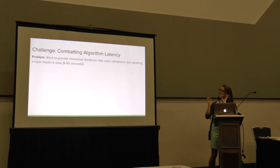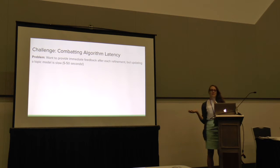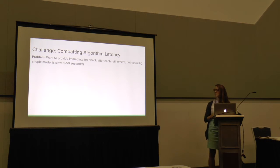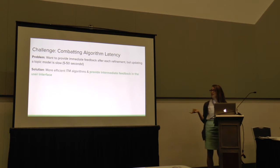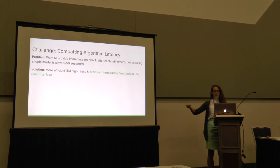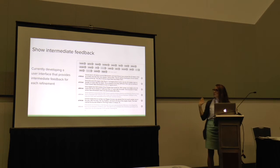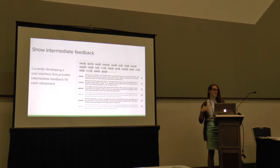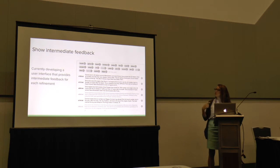A big challenge in interface design is that we want to provide immediate feedback, but updating a topic model can be really slow — from 5 to 50 seconds in our research. There are two ways to handle this: developing more efficient algorithms, and providing intermediate feedback in the interface. In our current prototype, we're testing intermediate feedback by striking through removed documents and words, and underlining added words, so users don't forget what they did before the modeling process completes.